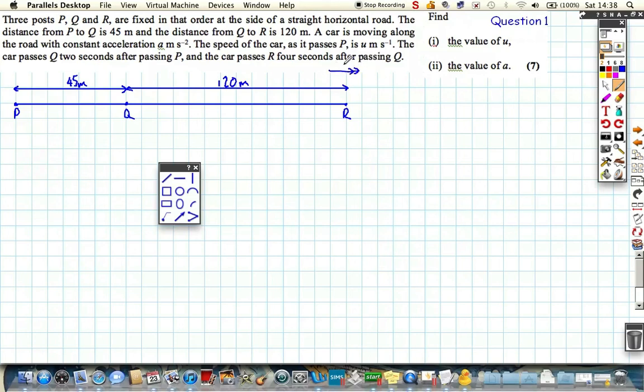Okay, if we consider the acceleration in this direction, we'll call it a. And if we consider right as positive as well, we know at t equals 0 it passes here, at t equals 2 it passes Q, and 4 seconds after that, so at t equals 6, it gets there.